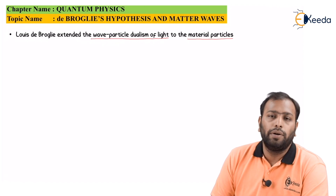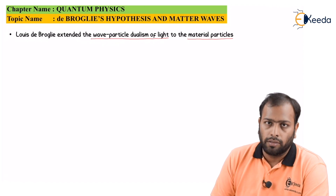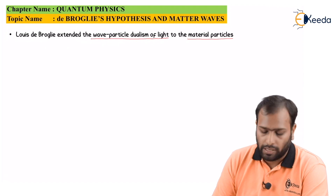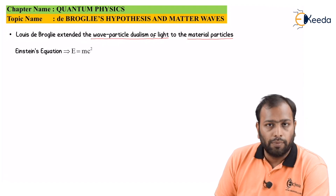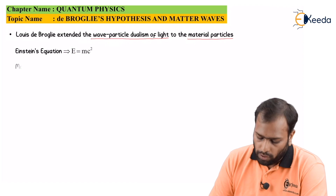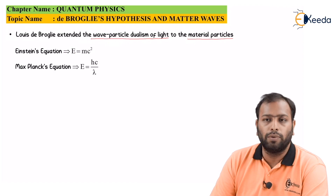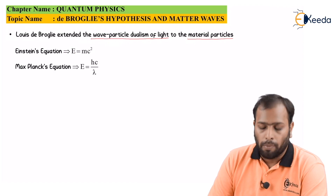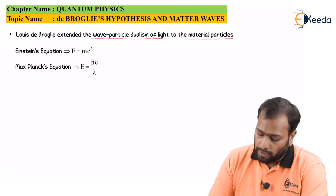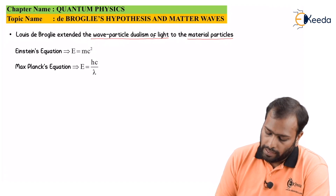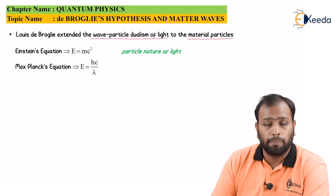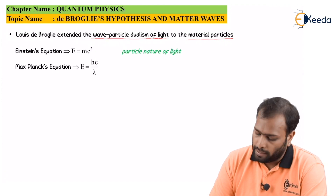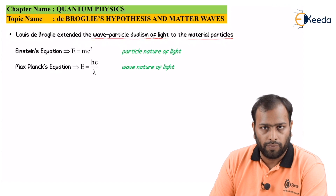How did De Broglie arrive at this Hypothesis? He took up Einstein's equation E = mc² and also Max Planck's equation E = hc/λ. Both of these equations relate to light. E = mc² relates to the particle nature of light, and E = hc/λ relates to the wave nature of light.